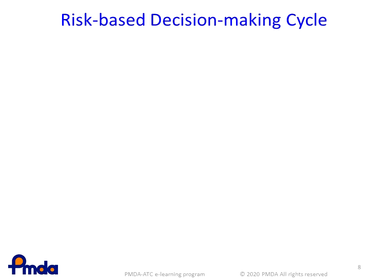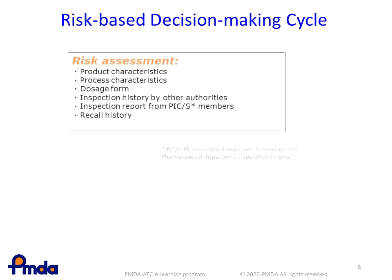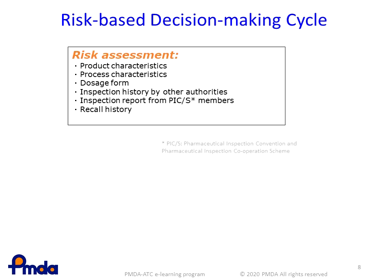This slide shows the decision-making process for whether an inspection will be on-site or desktop. Risks of products subject to inspection are assessed in light of process characteristics, dosage form, inspection history by foreign authorities, recall history, and PMDA's previous reports of on-site inspections, in order to determine the inspection method.